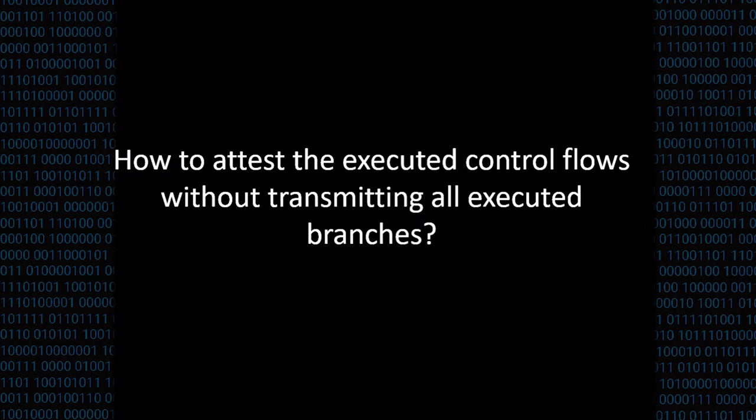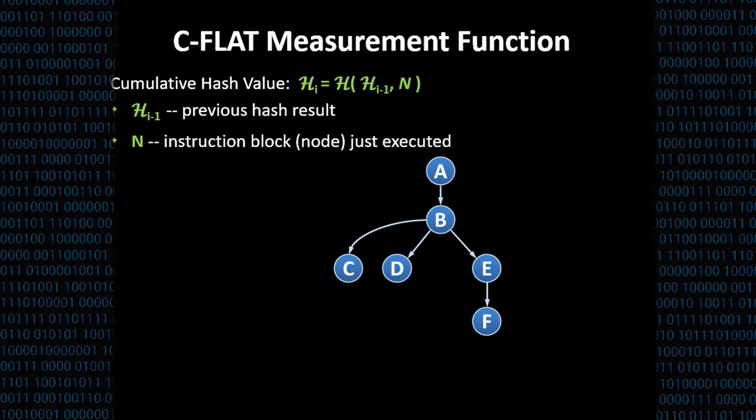So now the question is, how can we really measure the paths efficiently? Because one naive approach would be to simply transmit all the branching information, including source and destination addresses to the verifier. However, that would lead to a very long attestation response and also would require cumbersome processing from the verifier side.